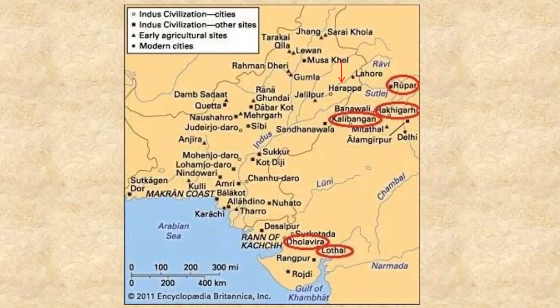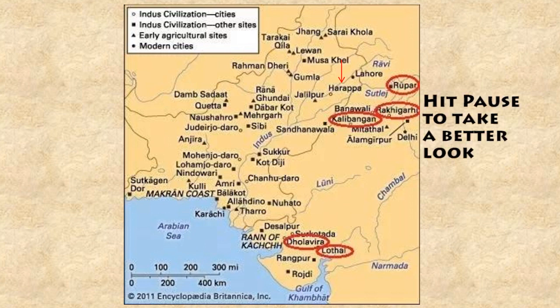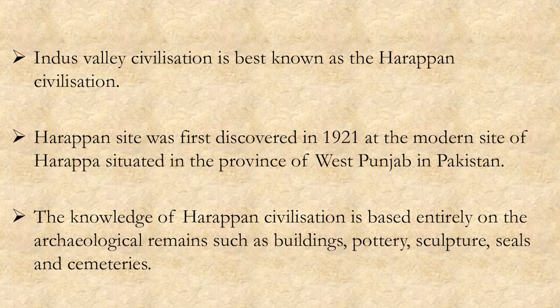Next is the discovery of Harappa Civilization. On the screen you can see the map displaying the Harappan sites. Harappan Civilization is also famously known as Indus Valley Civilization. Harappan sites were discovered in 1921 and were situated in the province of West Punjab in Pakistan. History of any civilization depends on sources. In the case of Harappa, archaeological sources like buildings, pottery, and sculpture are major sources that give lots of information about the civilization.